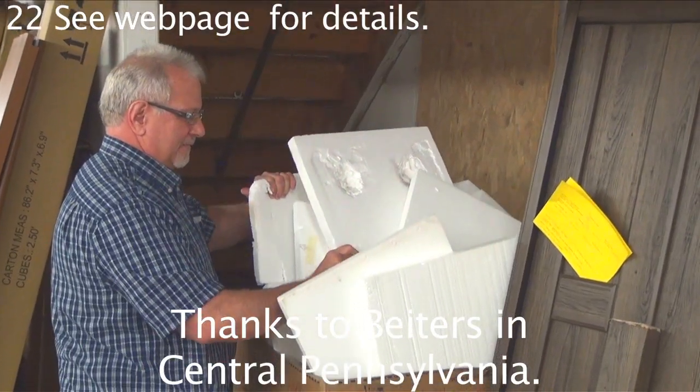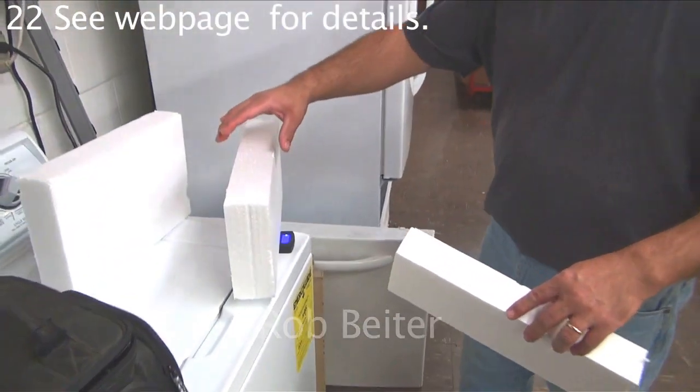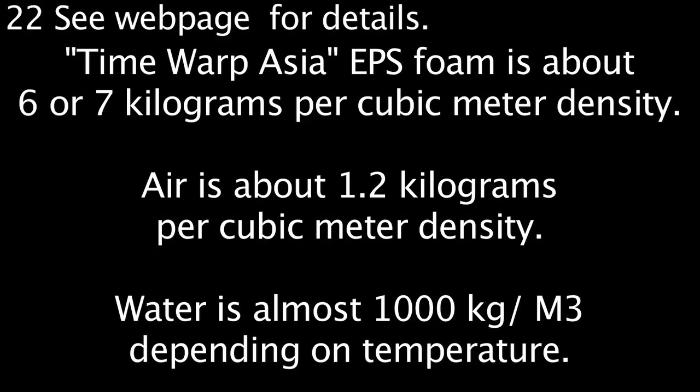There were nice big pieces, and then I stumbled upon some foam from China that was much lighter than anything I'd ever seen before. At six kilograms per cubic meter density, it's only four times more dense than air.